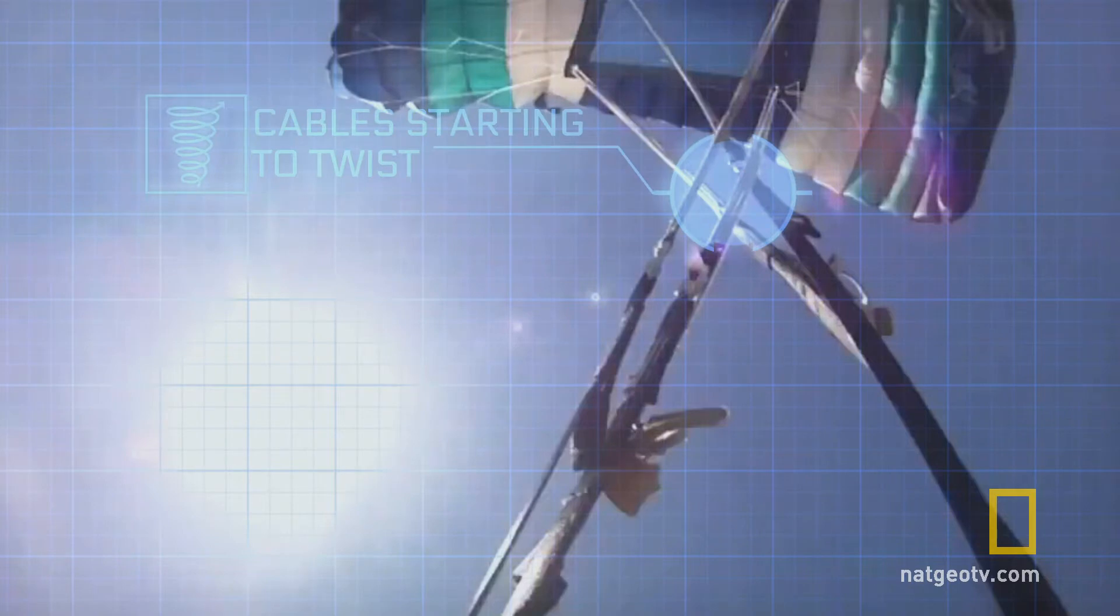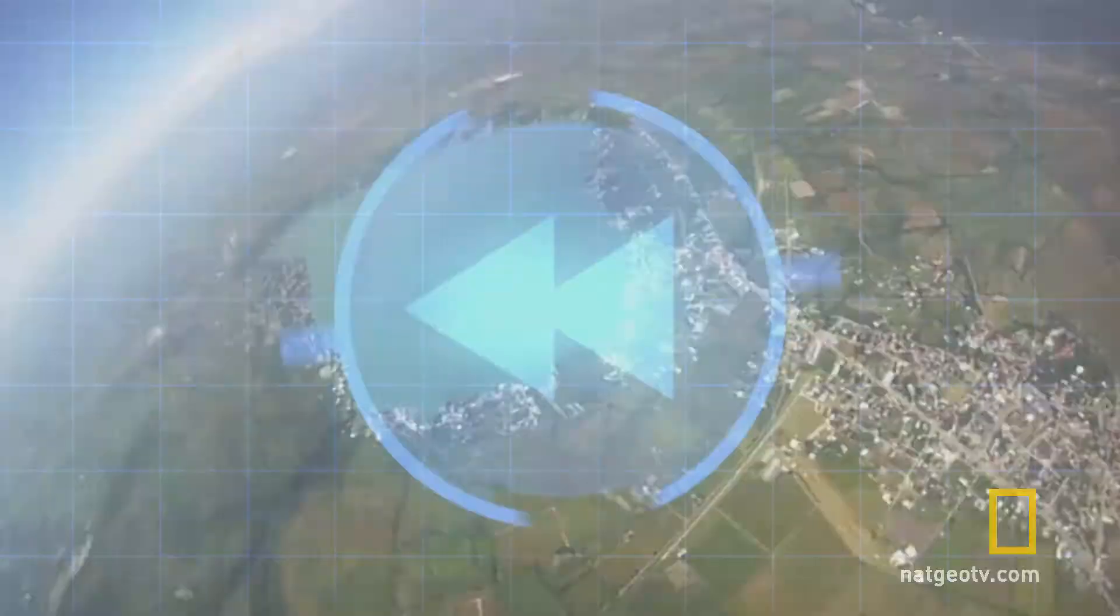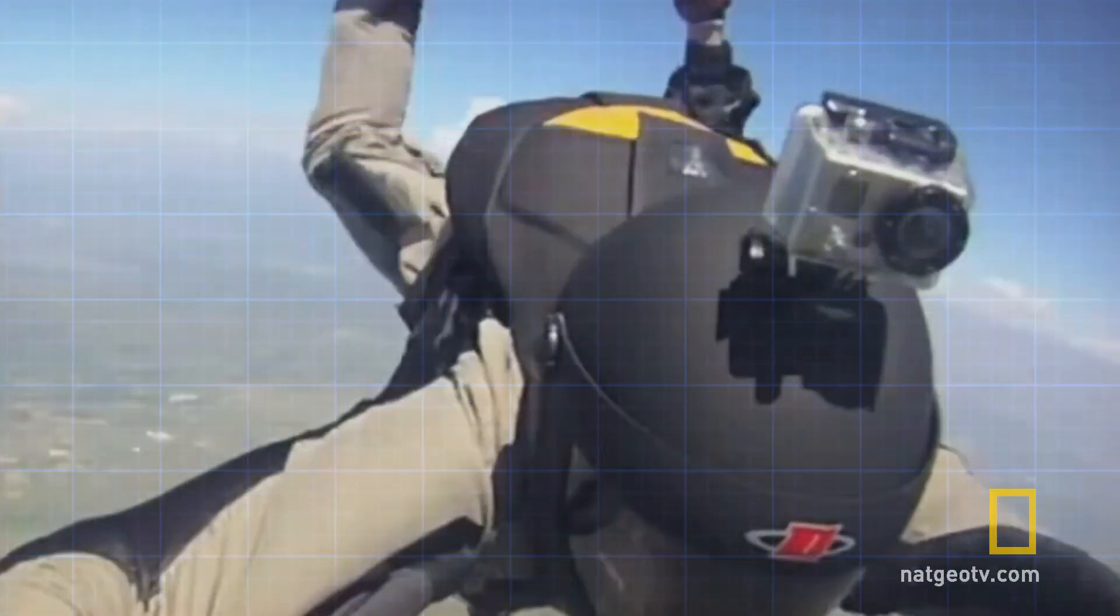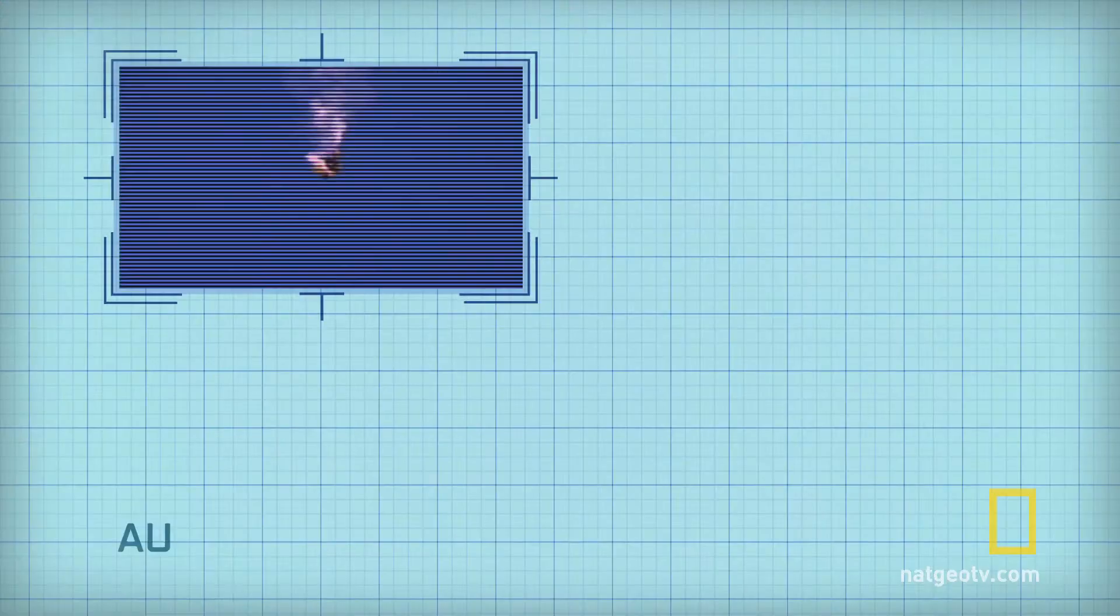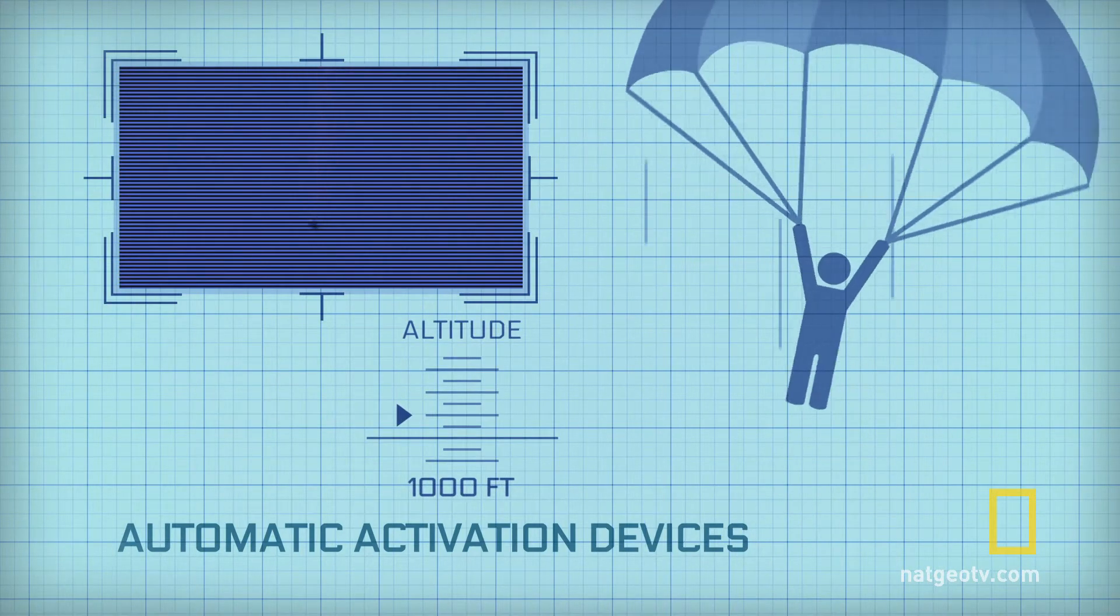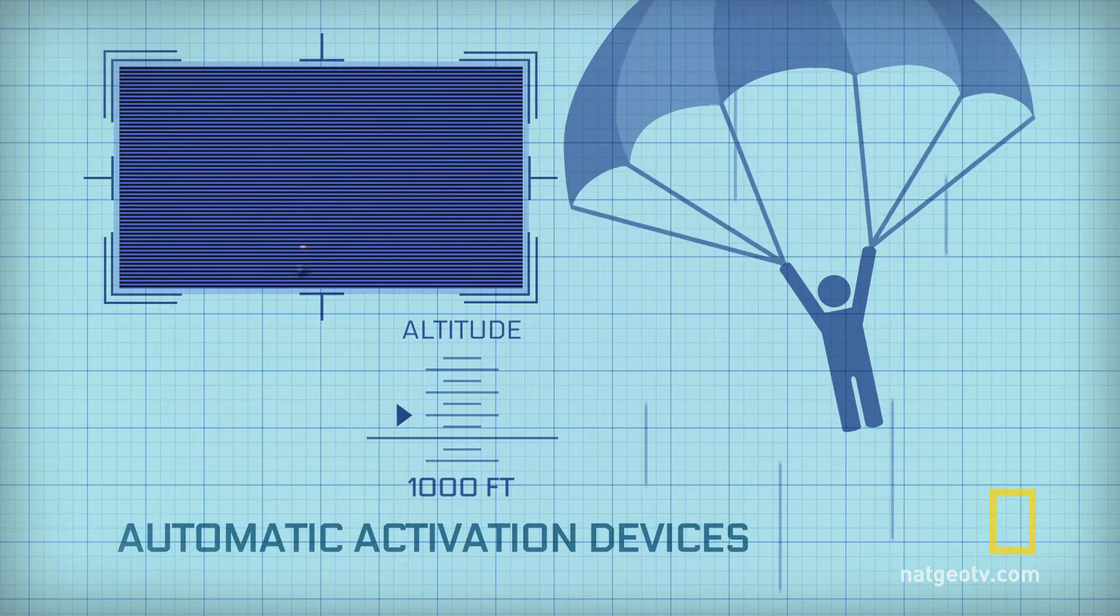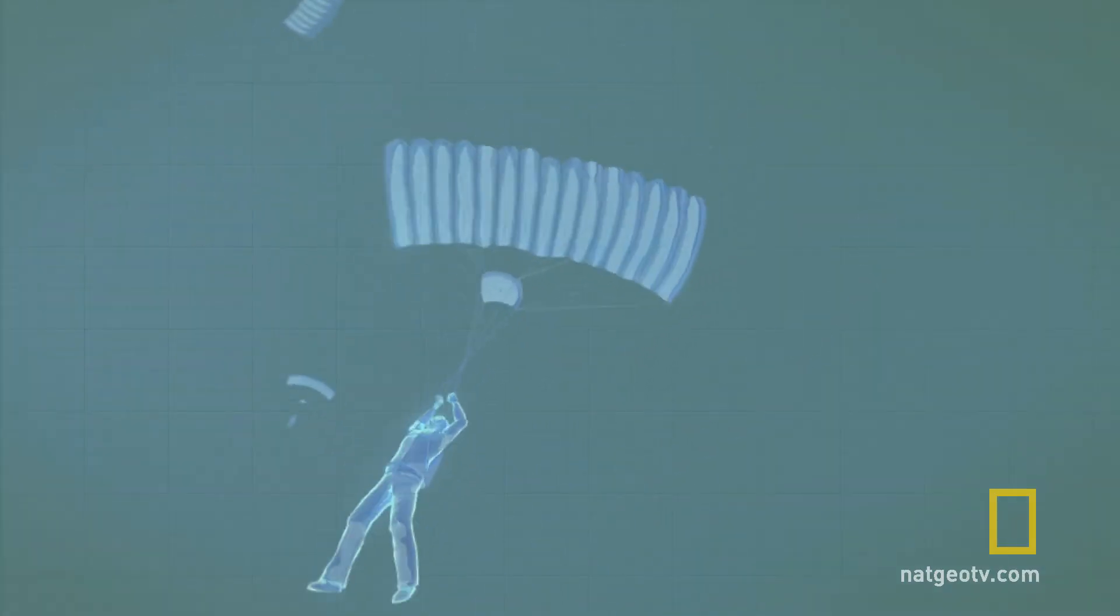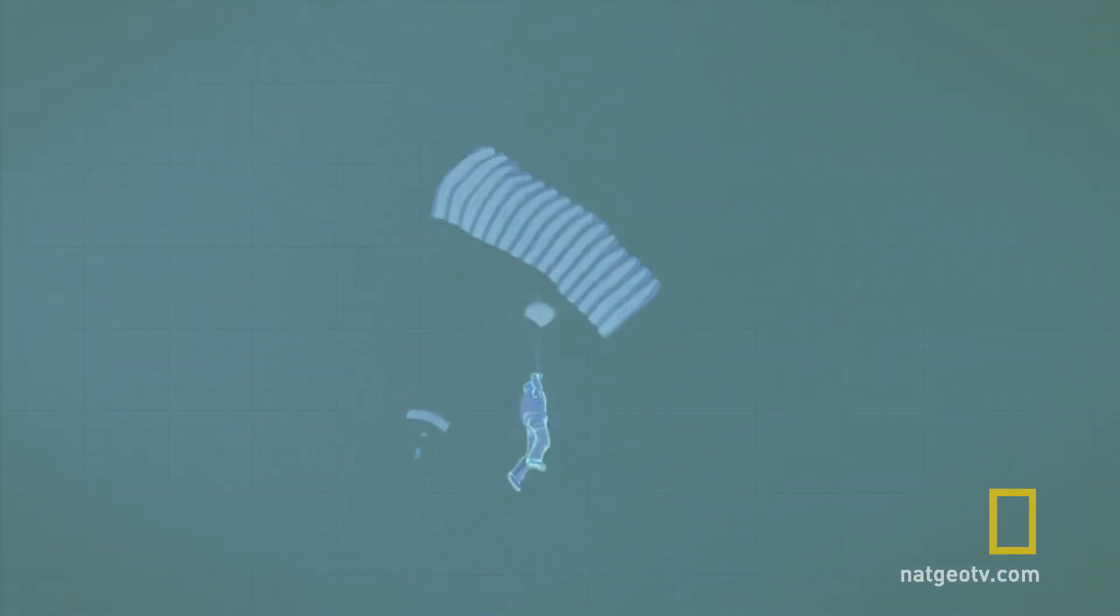Did you see the shoots? They're high-tech packs equipped with automatic activation devices. Automatic activation devices initiate parachute deployment at a preset altitude, commonly 1,000 feet. As the jumper attempts to untangle his parachute, he could become reliant on his AAD.